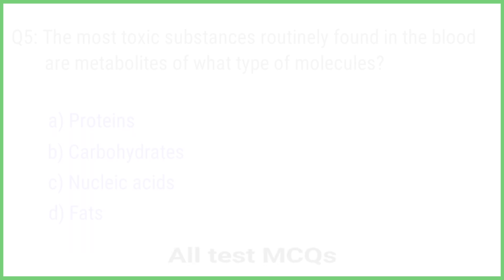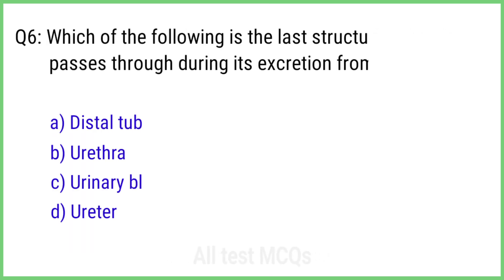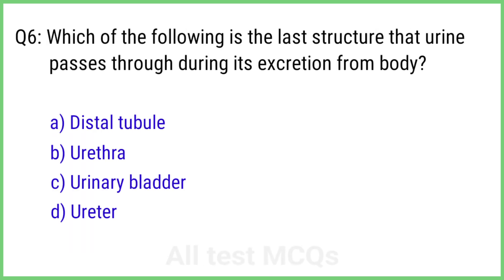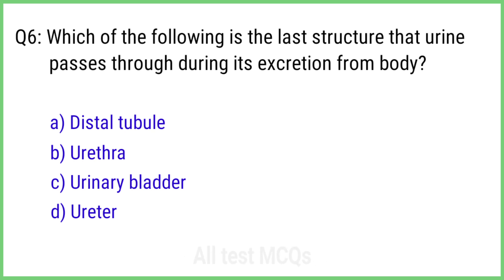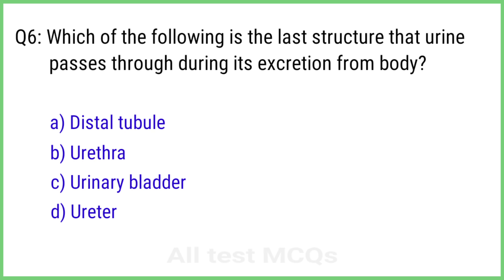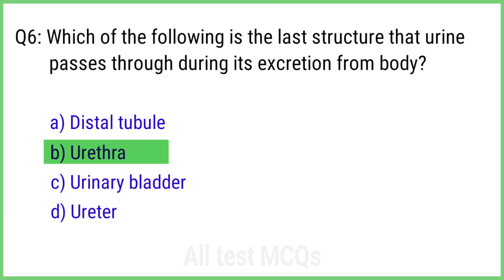Question 6. Which of the following is the last structure that urine passes through during its excretion from the body? The right answer is option B: Urethra.